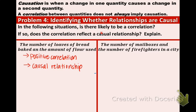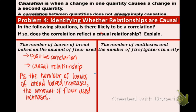Okay, and now let's just write a conclusion sentence. We're just explaining our answer, and then we'll go on to the second side. As I mentioned before, the number of loaves of bread increases and the amount of flour used increases as well. Positive correlation and causal relationship.